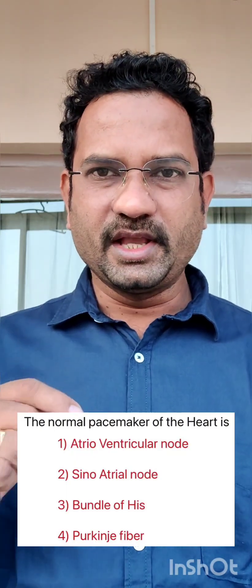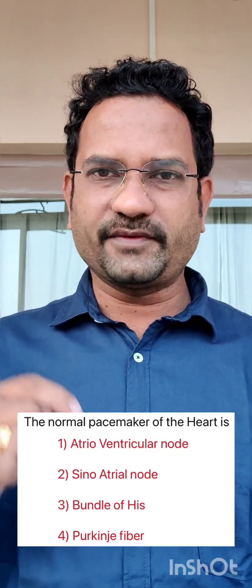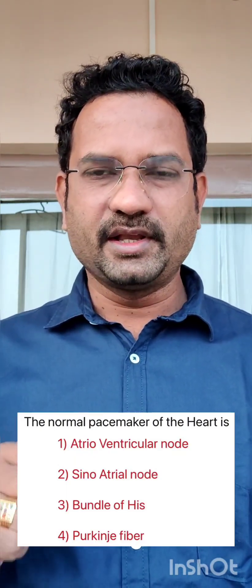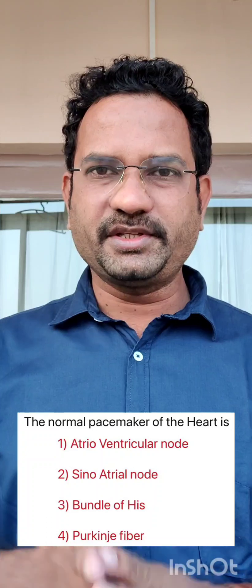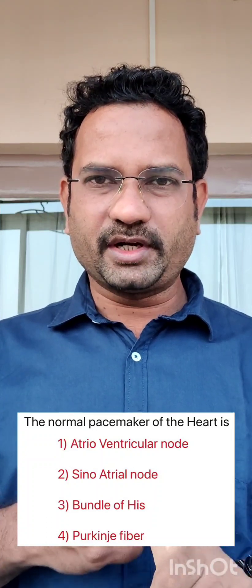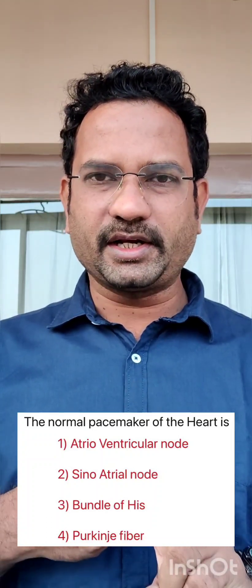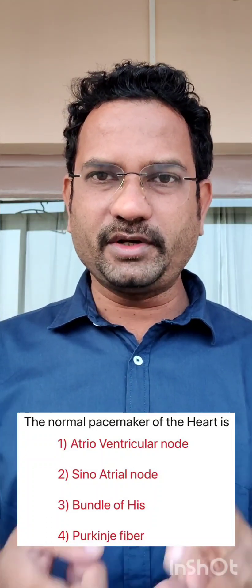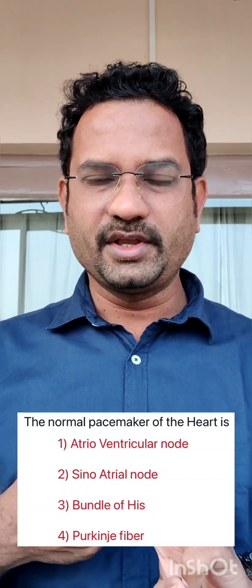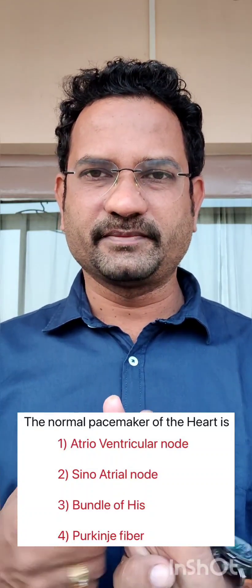Now look at the question. It says: the normal pacemaker cells of the heart is — four options are given: first, atrioventricular node; second, sinoatrial node; third, bundle of His; fourth, Purkinje fibres.